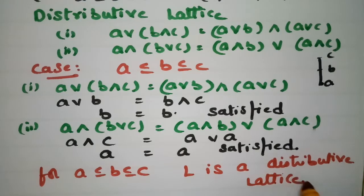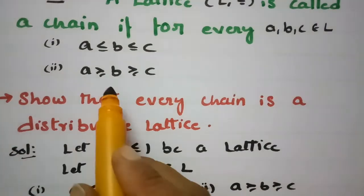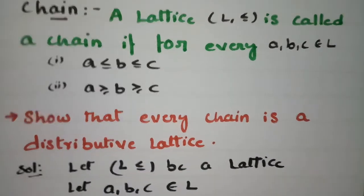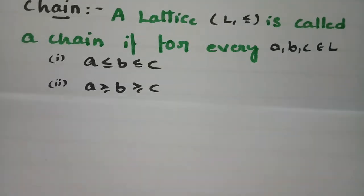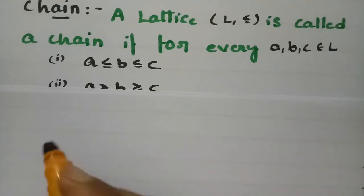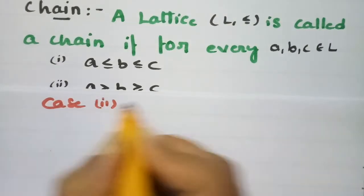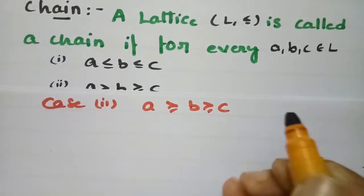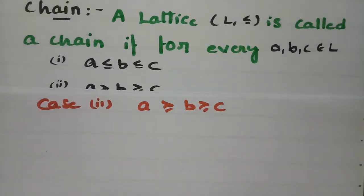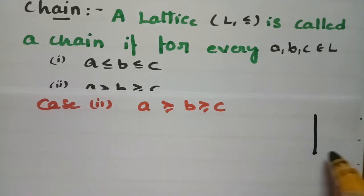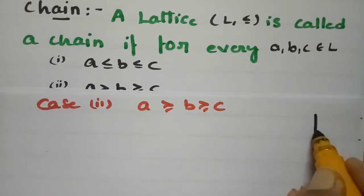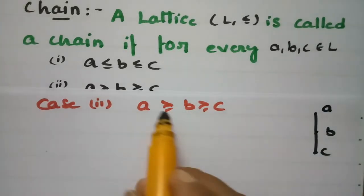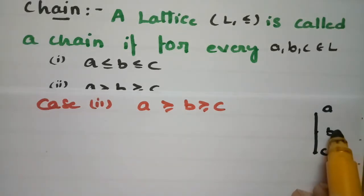For Case 2, according to the chain property, the second case is A ≥ B ≥ C. The Hasse diagram here has C at the bottom, B in the middle, and A at the top, since A is greater than B and B is greater than C.